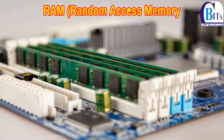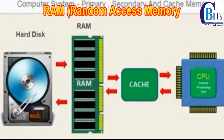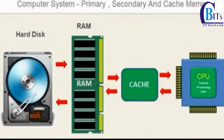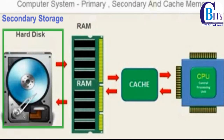RAM plays an important role in the quick operation of a computer. The primary memory stores all the instructions of the operating system and application programs that can be quickly and easily reached by the CPU or microprocessor whenever they are needed. This speeds up the performance of your computer compared to accessing the same data from secondary storage.